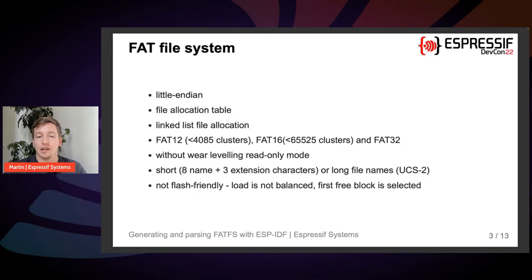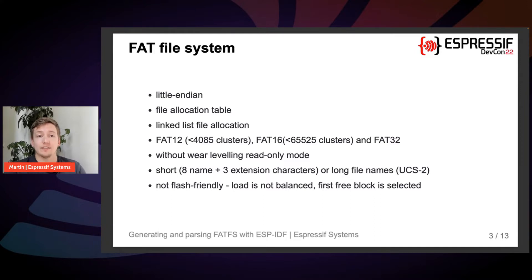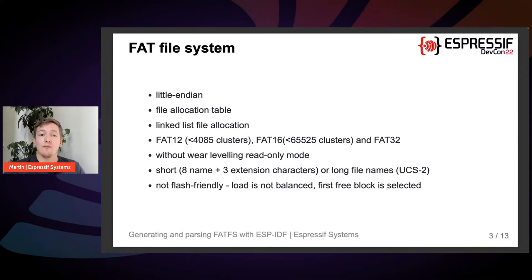The FAT file system is a simple protocol developed in 1977. It is in use till the present, especially in small devices like microcontrollers. The original types of FAT file systems are FAT12, FAT16, and FAT32. FAT12 and FAT16 differ mainly in the number of clusters, and FAT32 has a richer structure that can contain more metadata. Microsoft originally developed it for IBM personal computers that used little-endian architecture.